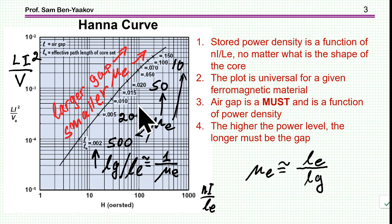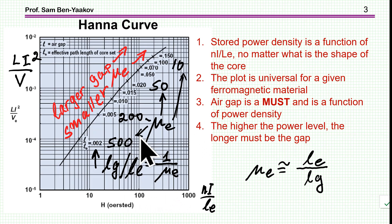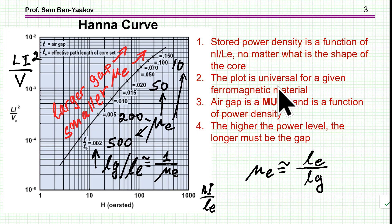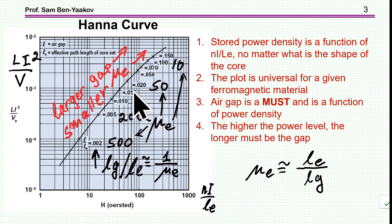What we can see is the following: the stored power density is a function of NI over LE, no matter what is the shape of the core. This is a universal curve. It's not related to any particular core shape, but it is related to B_max — the maximum magnetic flux density that you allow. This is a universal curve for any particular ferromagnetic material. We also understand that an air gap is a must, and it is a function of the power density. You cannot design a power inductor without a gap if you have a limitation of saturation, B_max. The higher the power level, the longer must be the gap.